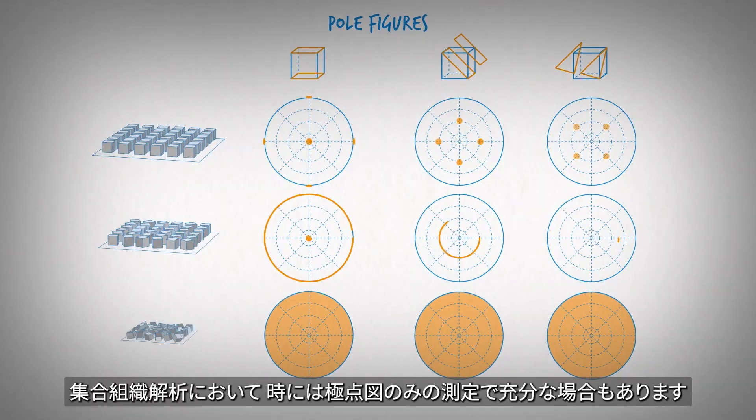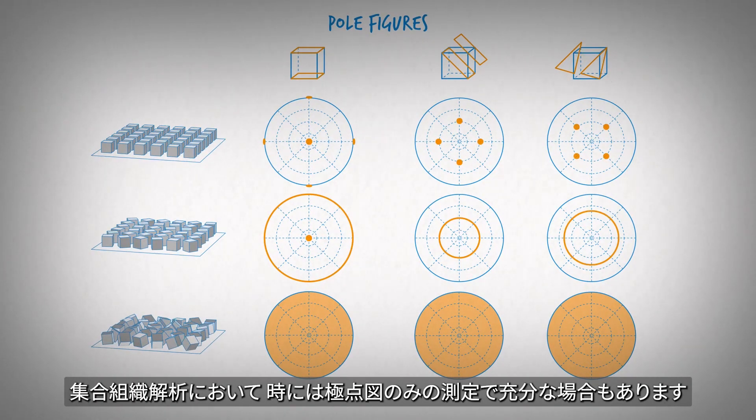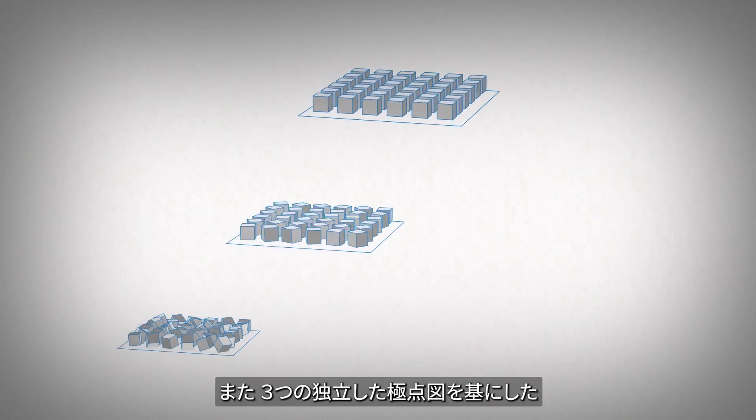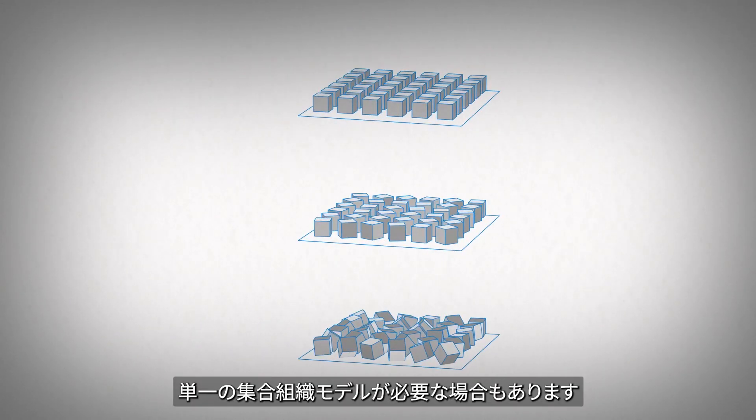In some cases, the pole figures are all that is needed and the job is done. In other cases, a single orientation model which takes into account the three independent pole figures is needed.